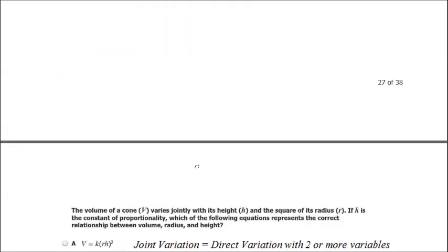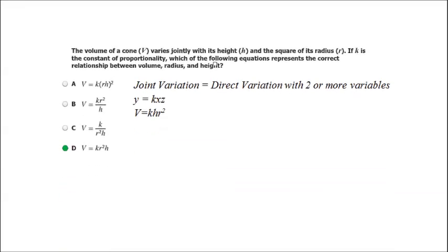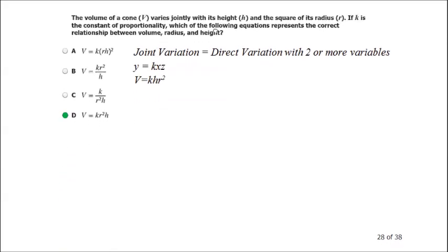Question 28. The volume of a cone, V, varies jointly with its height, H, and the square of its radius, R. If k is the constant of proportionality, which equation represents the correct relationship between volume, radius, and height?